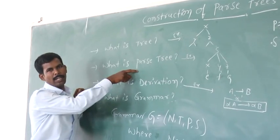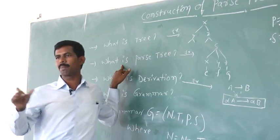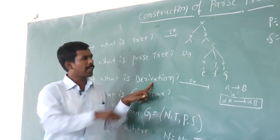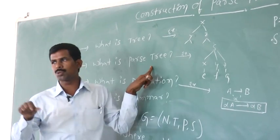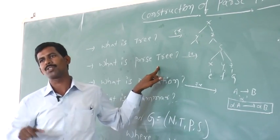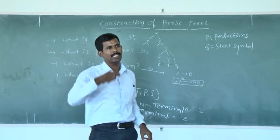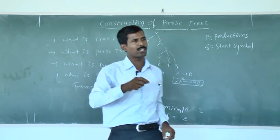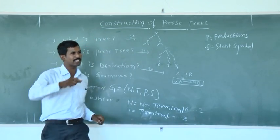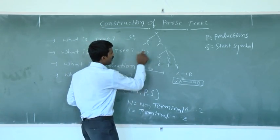Coming to the parse tree: the parse tree is a graphical presentation of a derivation. The parse tree is used to represent the syntactic structure of a string for some grammar. For example, when we want to construct a parse tree for any grammar, the parse tree represents the syntactic structure of that string.